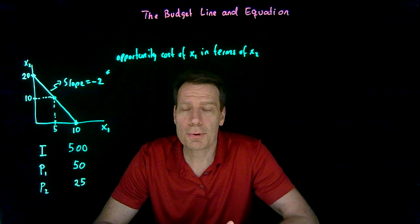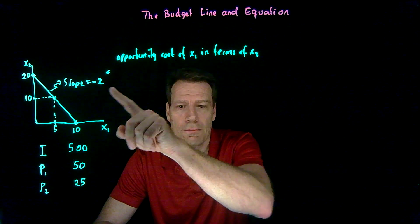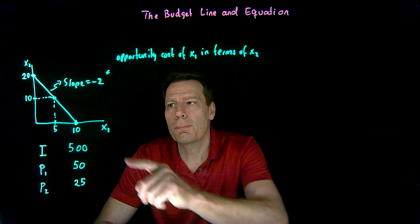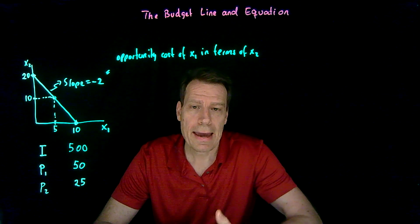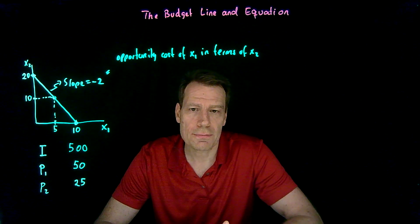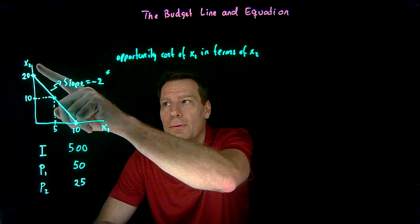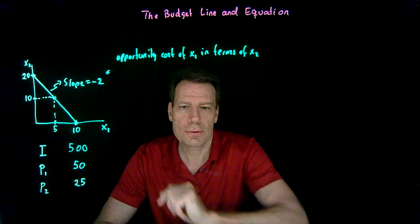We could also ask, what's the opportunity cost of the good x2? And it turns out that'll be the inverse of that slope. To buy one more unit of x2, you have to give up half a unit of x1 because x1 is twice as expensive as x2. So the opportunity cost of good 2 will be the inverse of that slope.